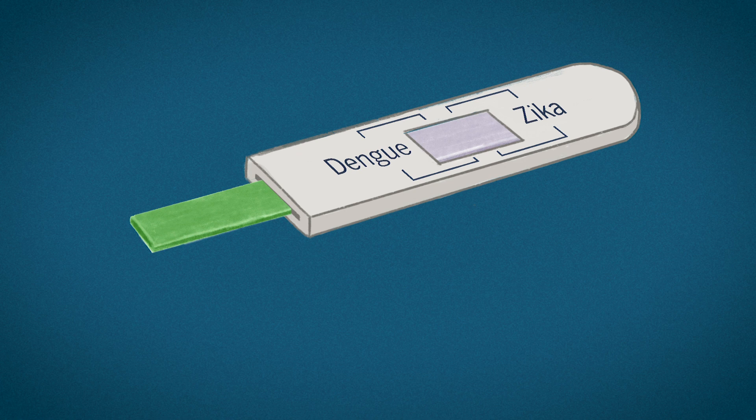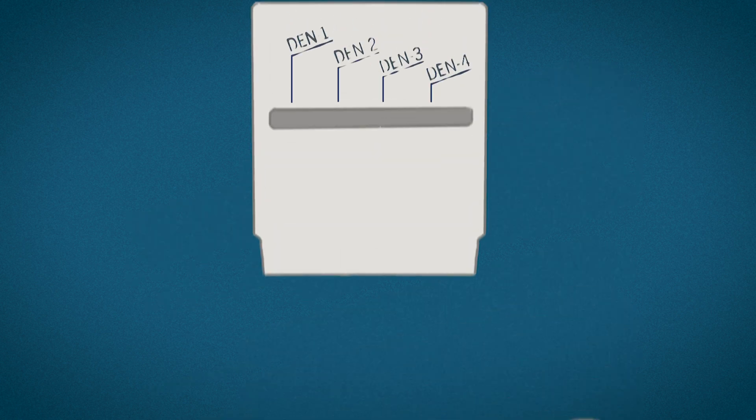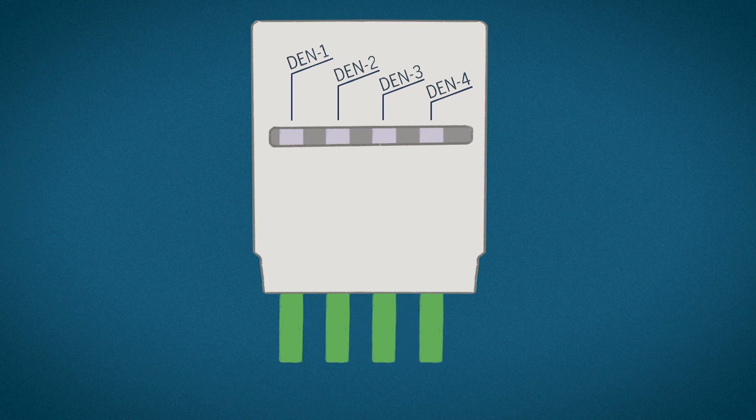One day, they envision it may be possible with just a drop of blood to have an easy-to-read result that tells doctors whether a patient has Zika virus or its close cousin, dengue. A multi-channeled strip may also reveal which type of dengue.